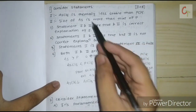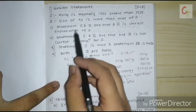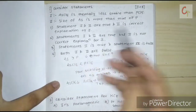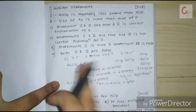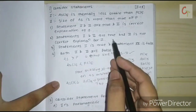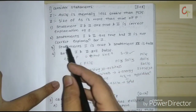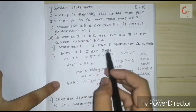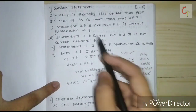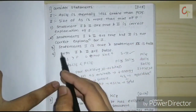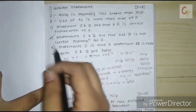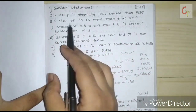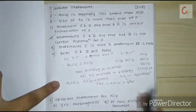Statements one and two are both correct — statement one (AsCl5 is less stable) and statement two (As is larger than P) are true — but statement two is not the correct explanation of statement one, because the reason is the shielding effect, not the size. There is no direct relation between size and thermal stability here. The correct answer is the option stating both are true but two does not correctly explain one.